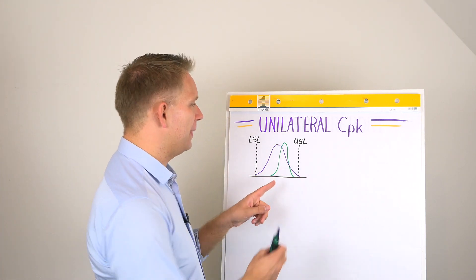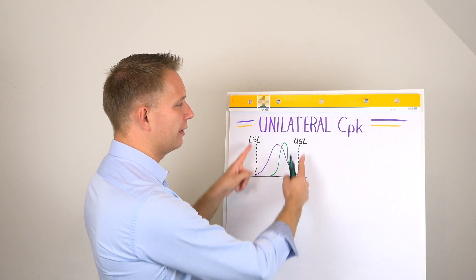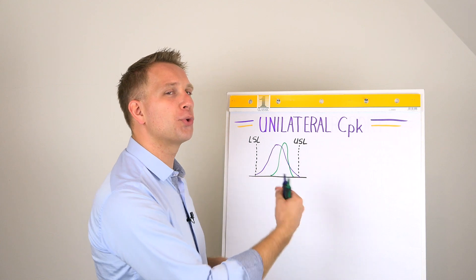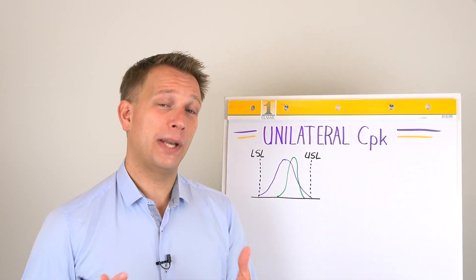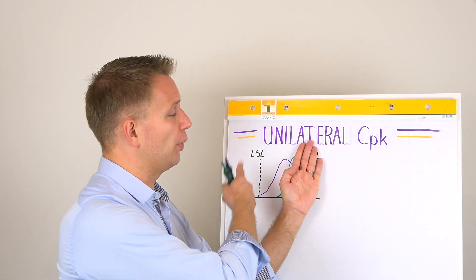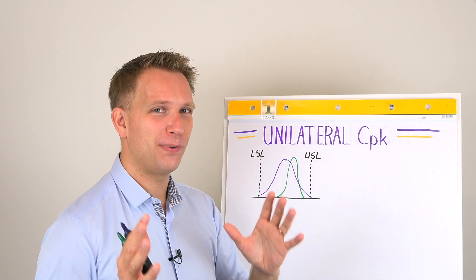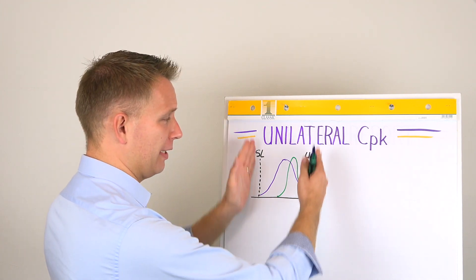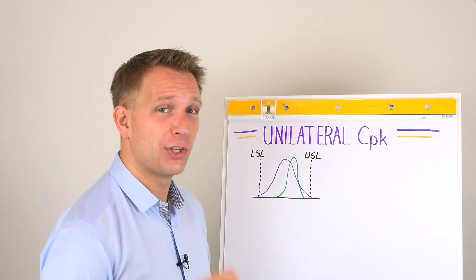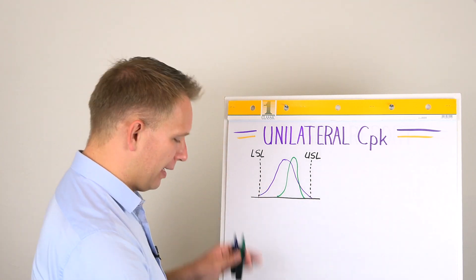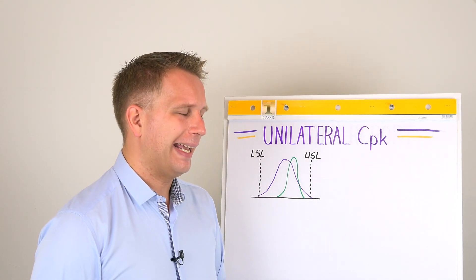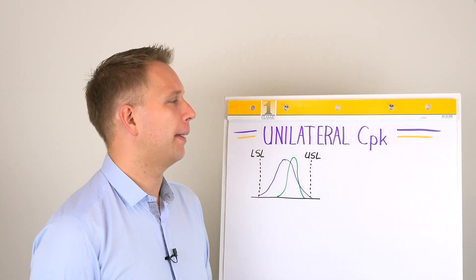CP checks: can I fit between two limits? CPK checks: how far am I from the closest limit? When we talk about unilateral tolerance where there is only one limit, you can already feel that CP — which checks whether you fit between two limits — cannot be calculated anymore. But CPK can, so stay tuned for that.